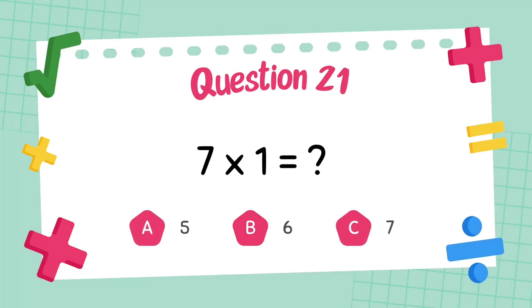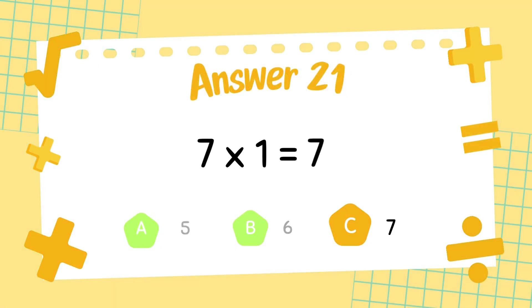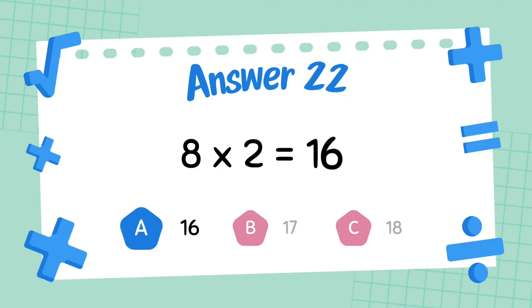What is 7 multiply 1? The answer is 7. What is 8 multiply 2? The answer is 16.